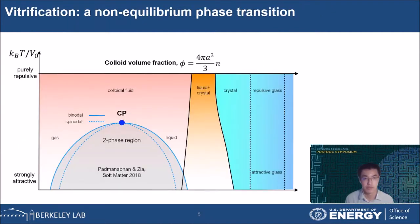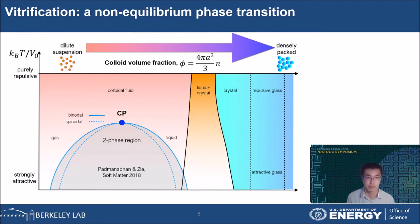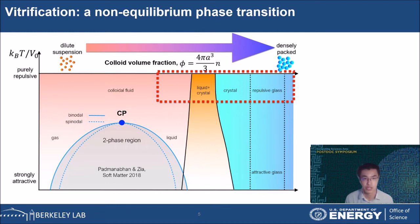Phase transitions can be described by a phase diagram. Colloidal phases are set by surface property and concentration. Colloidal surfaces determine their interaction, which can range from purely repulsive to strongly attractive, shown on the vertical axis. Here KBT is the thermal energy and V0 is the depth of the interparticle potential. The volume fraction is the dimensionless concentration of particles, which can range from dilute to densely packed. Here a is the particle radius and N is the particle number density. Thermodynamically, crystalline state is favored as it has a lower free energy.